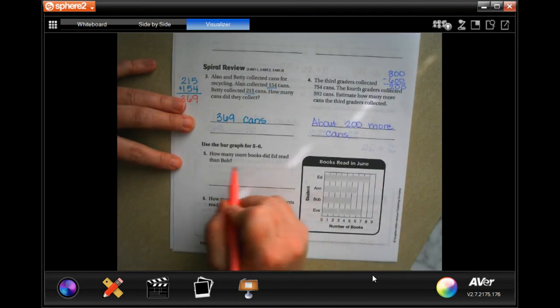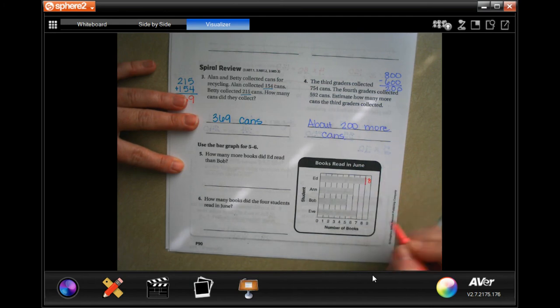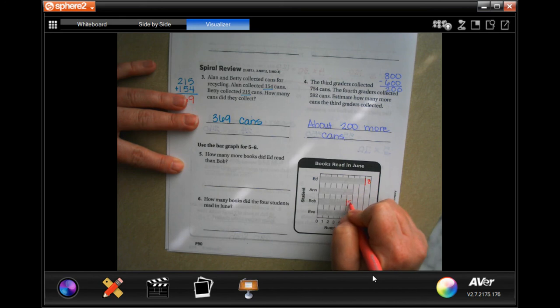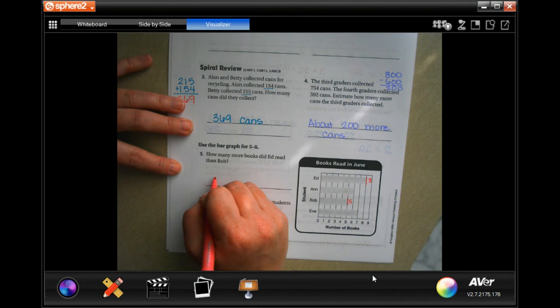How many more books did Ed read than Bob? Well, Ed is out to the 8th line, and Bob is out to the 5th line. So how many more means we have to find the difference. So 8 minus 5, well, that's 3 more books.